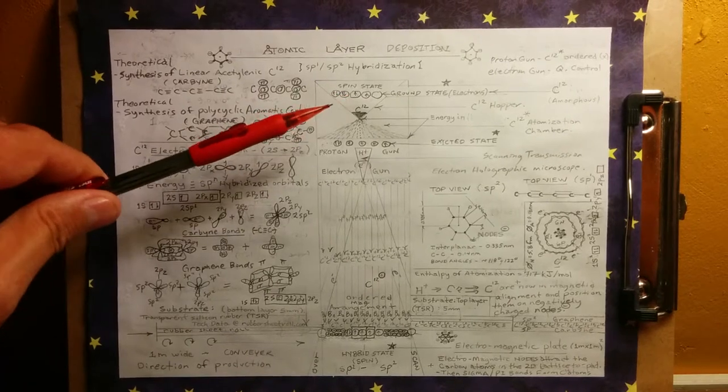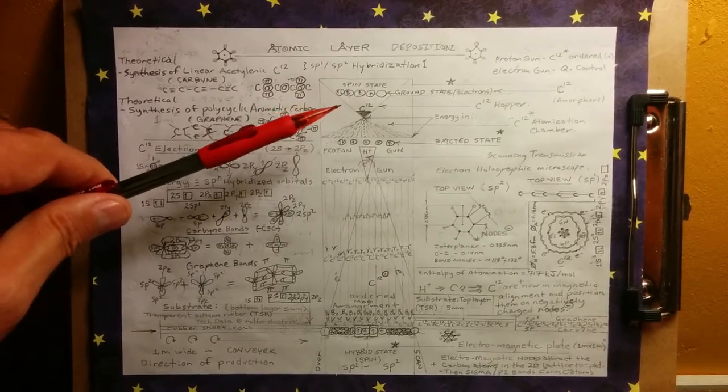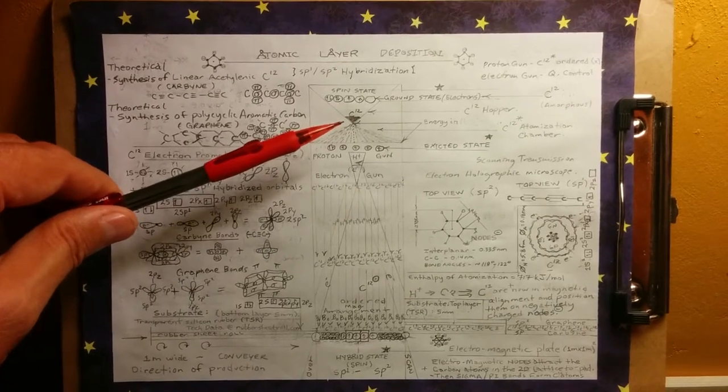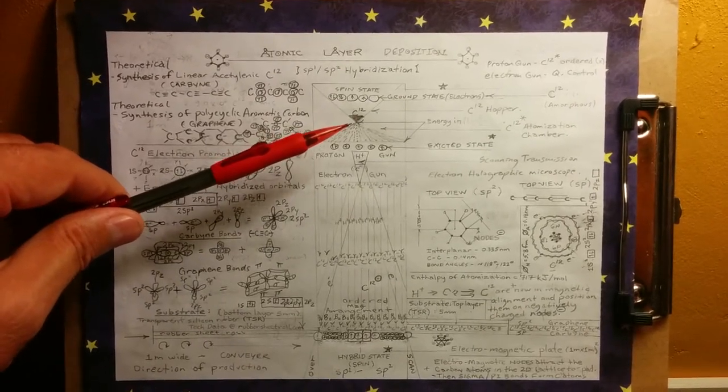Now we have our carbon atoms coming in at the top of the machine in the ground state. This is their spin state here. They come down here. Remember, this is amorphous or carbon dust, very ordinary carbon dust.